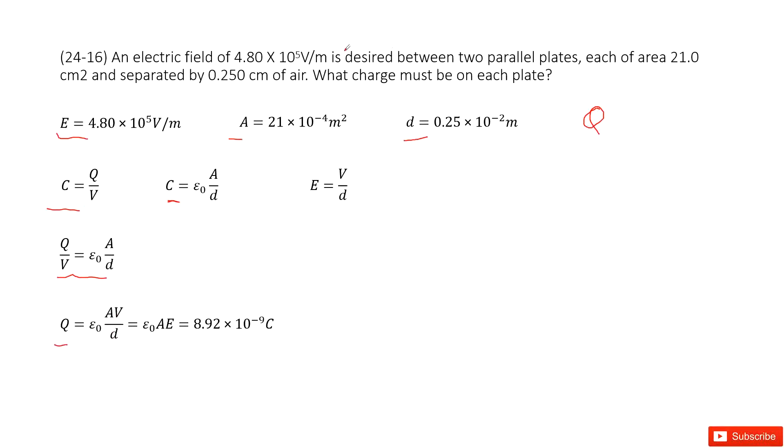Now, we look there - we don't have a potential, but we know V over d is just the electric field. So we replace V over d with E. Now you can see epsilon naught is a constant, A is given, E is given, so the final answer is very easy to calculate. Thank you.